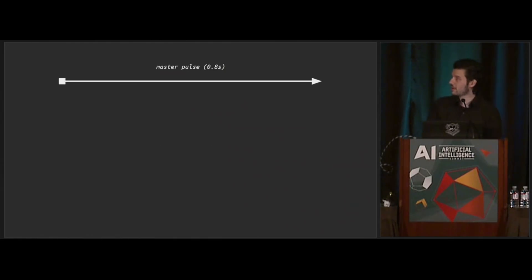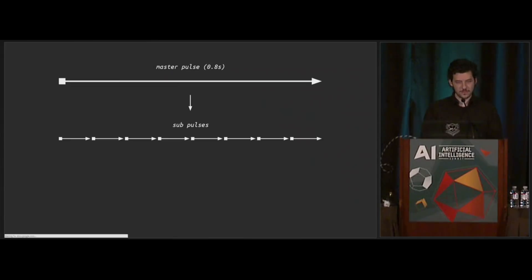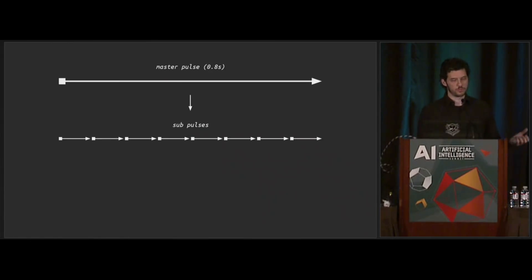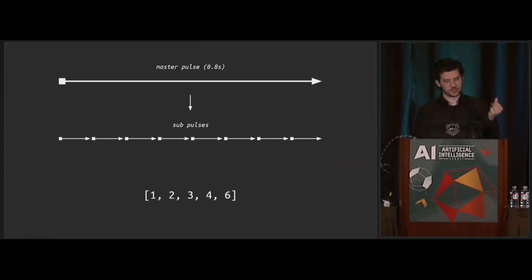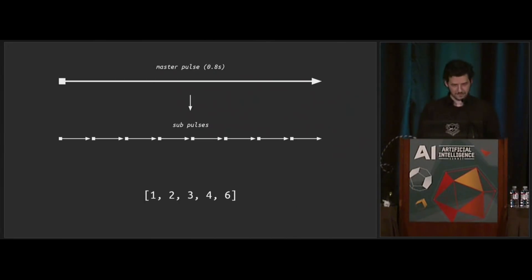Assuming we take our master pulse and subdivide it into eight sub-pulses — which is something we do a lot in the game — our rhythms would sound like this. Here's our master pulse, and here's our sub-pulse: takataka, takataka, takataka — that's that pulse subdivided eight times.